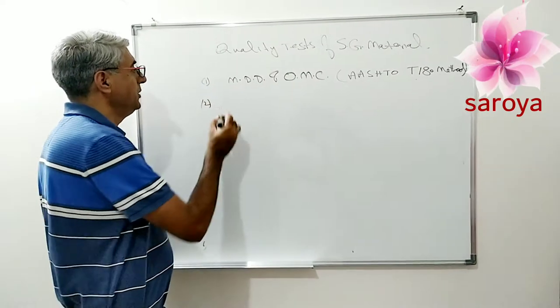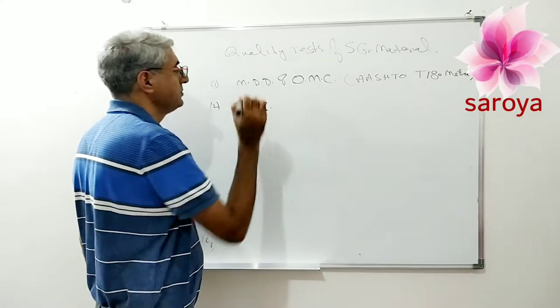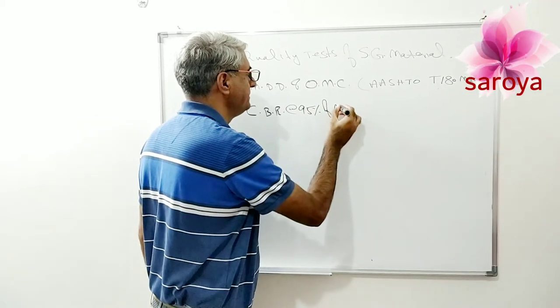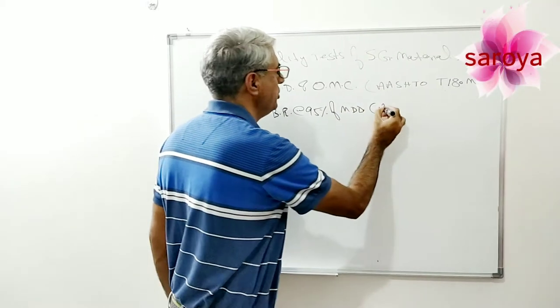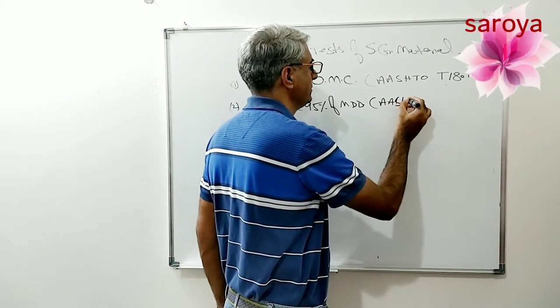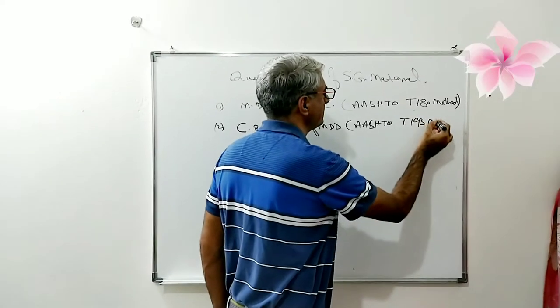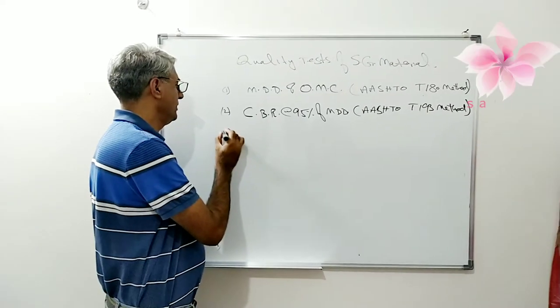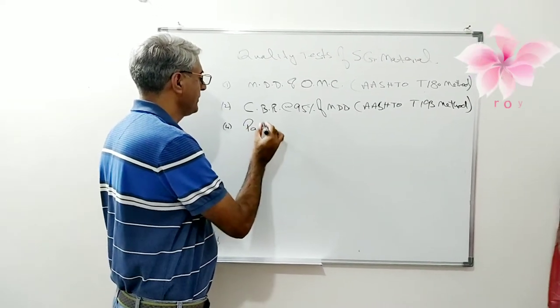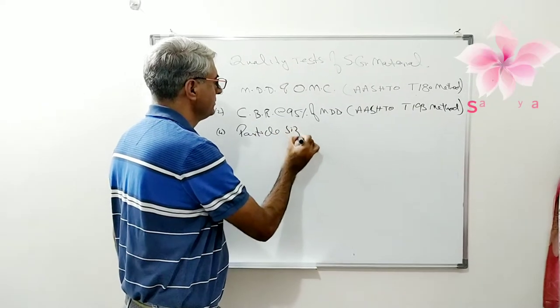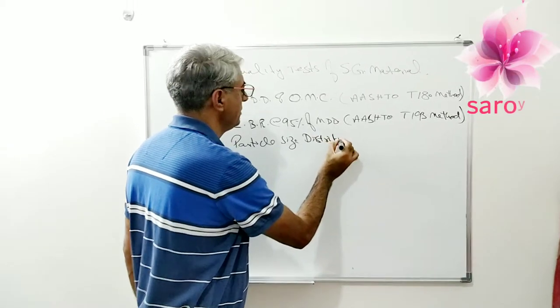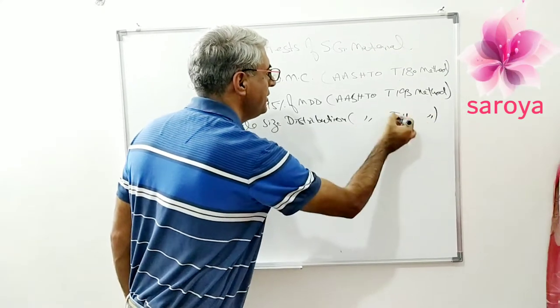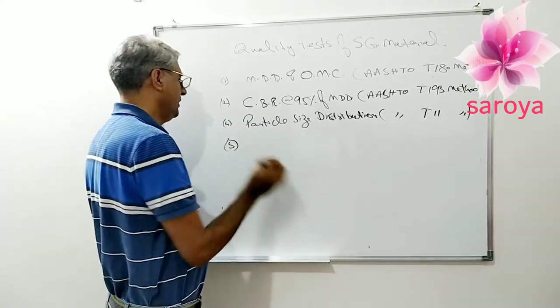Second one, we will determine its CBR value at 95% of MDD by AASHTO T193. Particle size distribution, same by AASHTO T11, this is a T11.